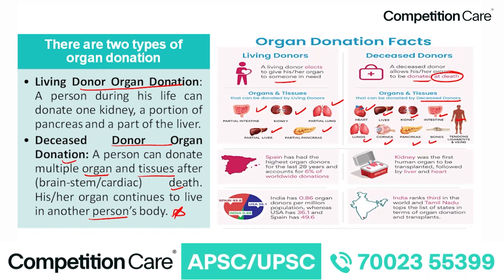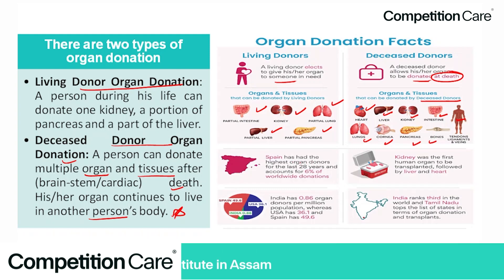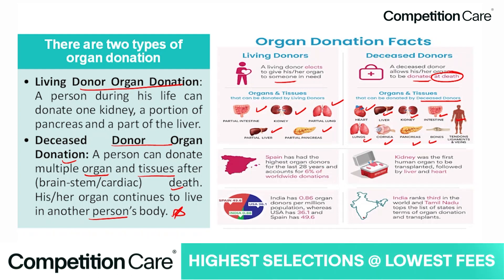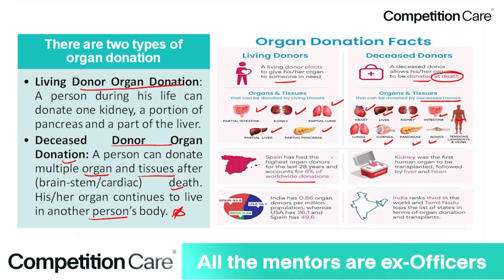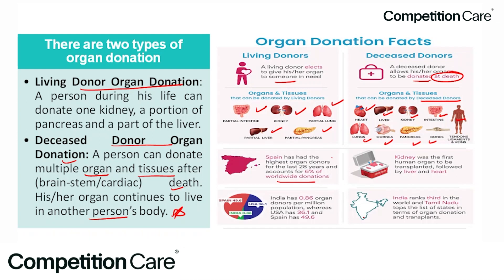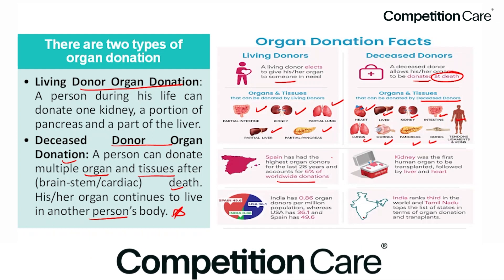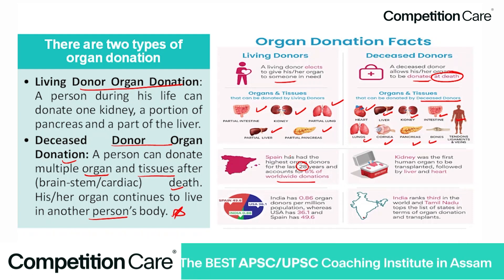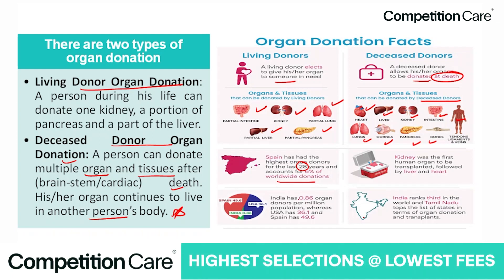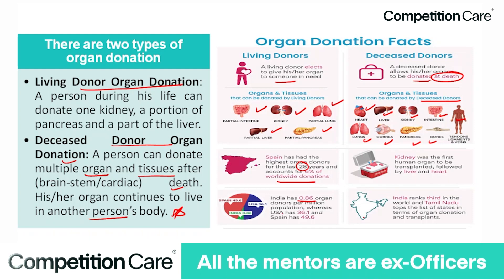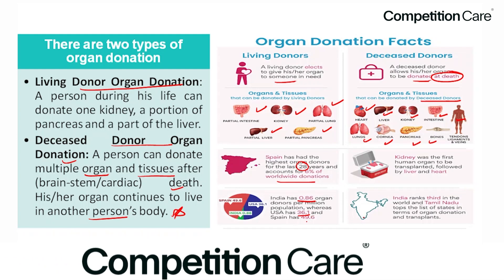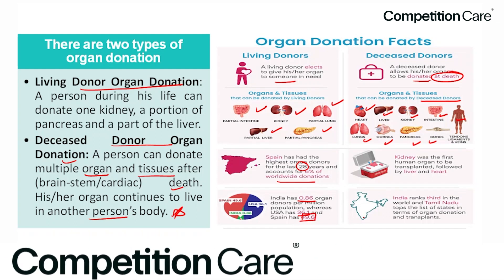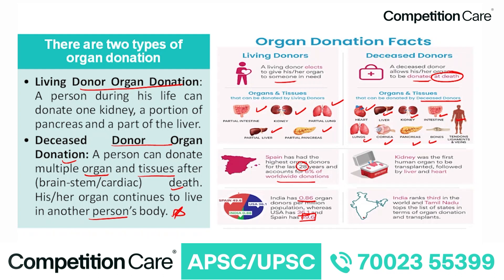Spain has had the highest organ donors for the last 28 years and accounts for 6% of worldwide donation. India has 0.86 organ donors per million population, whereas the USA has 36.1 and Spain has 49.6. India has more living donors. Kidney was the first human organ to be transplanted, followed by liver and heart.